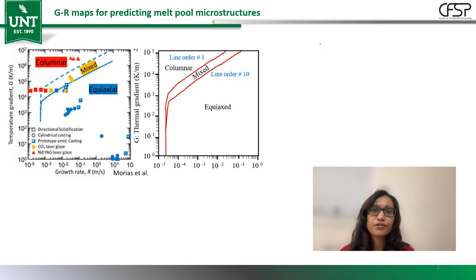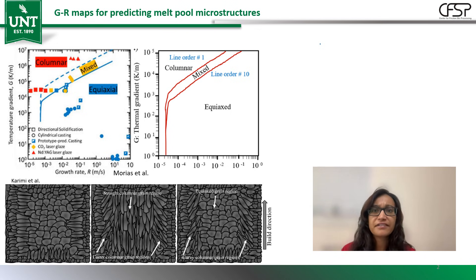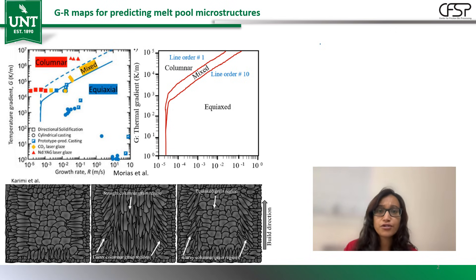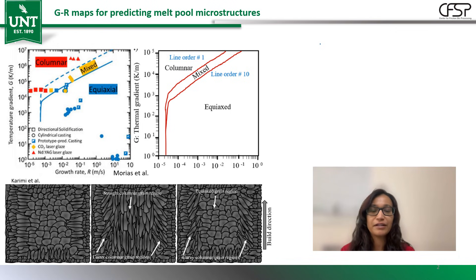This map predicts what microstructure a metal will get when it solidifies. It has a columnar section to the left, a transition region in the middle, and an equiaxed region to the right. The map predicts that during solidification we'll get either long narrow elongated columnar grains, short blocky planar regions, or pretty equiaxed grains. These maps change a lot with different alloys but they are very helpful to design the mechanical properties of the alloy.